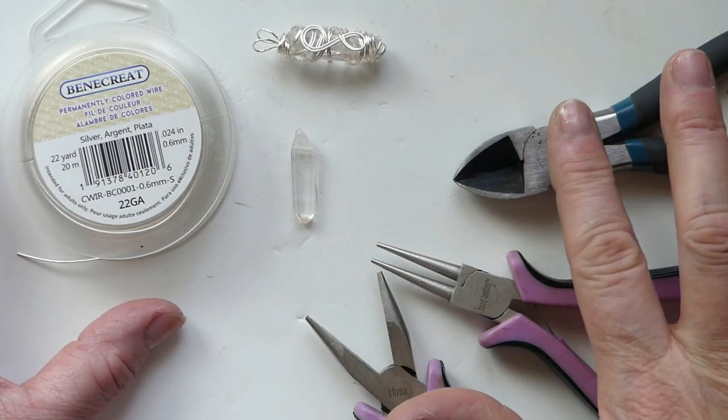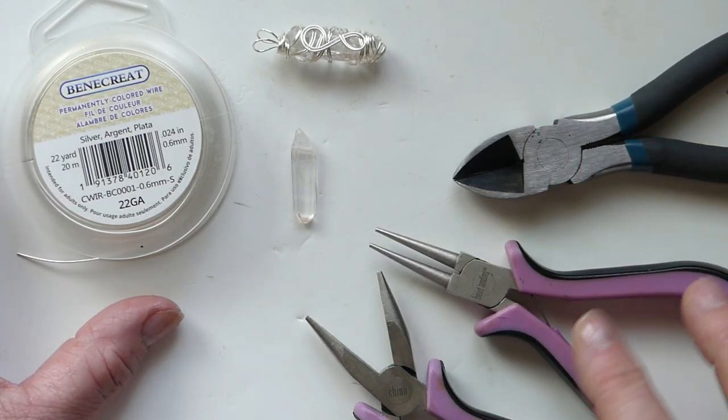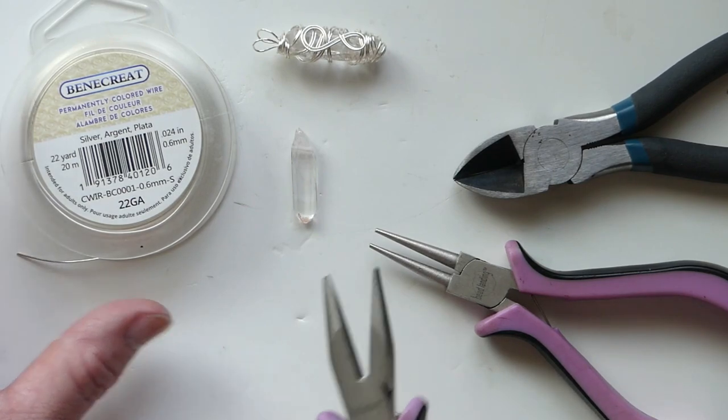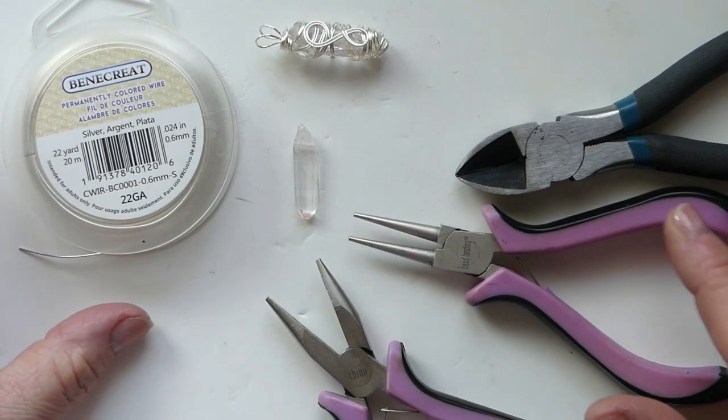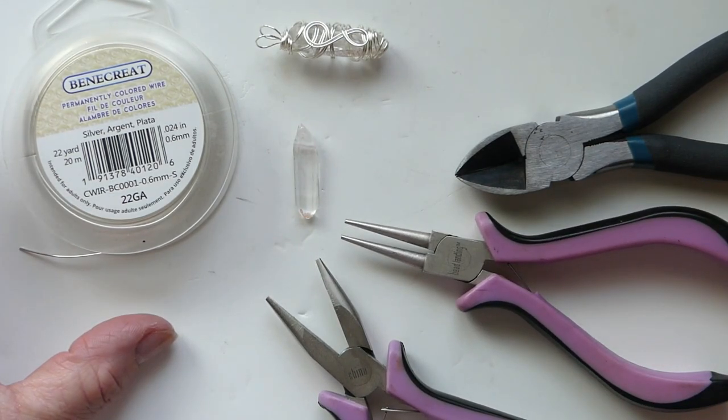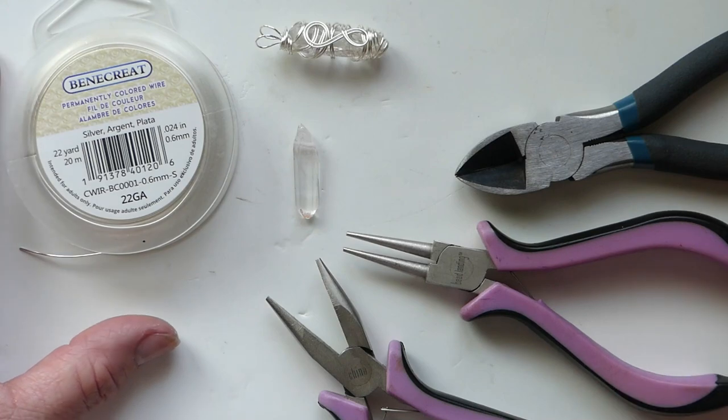We have a pair of snips. We have a couple pair of jewelry pliers and these ones, once again, do not have teeth on them. So they are non-scarring and they are less likely to break your wire on you.